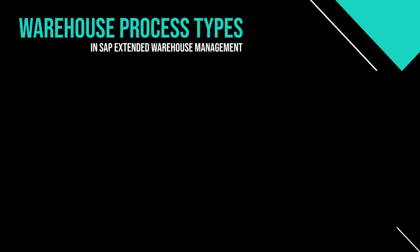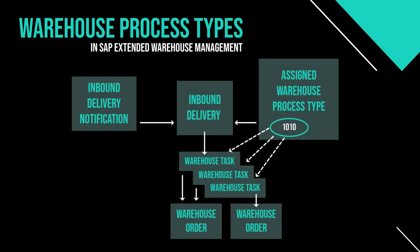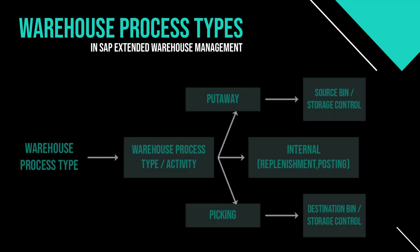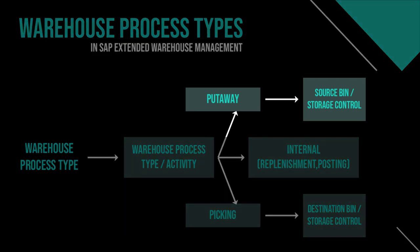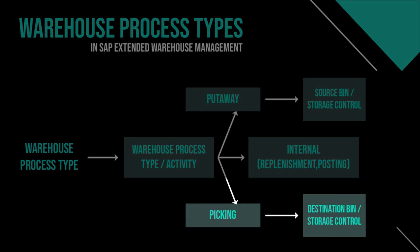The warehouse process type is determined during the creation of warehouse requests — such as outbound delivery requests and the outbound delivery order — or it can be maintained during the different steps of a process-oriented storage control. In SAP Extended Warehouse Management, the warehouse process type is assigned to an activity and a warehouse process category that controls the direction of the actual movement, such as a put away or stock removal activity.